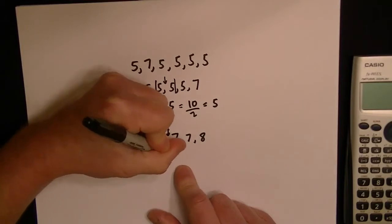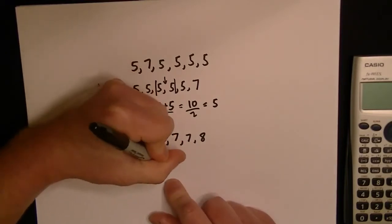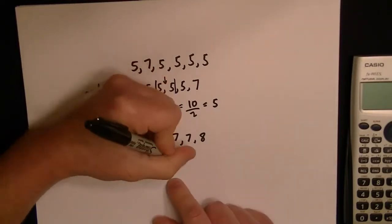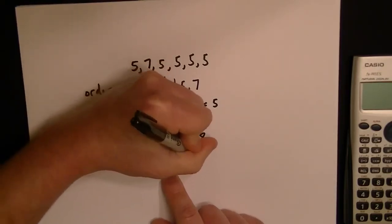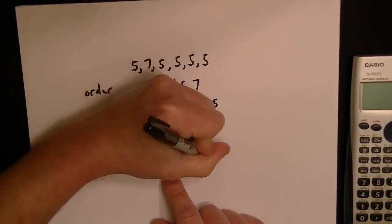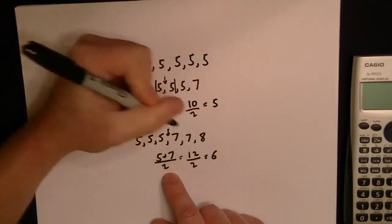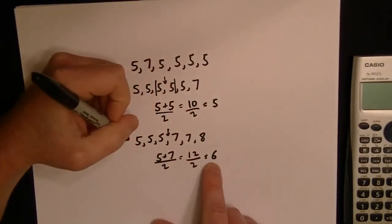So in this case, you would use 5 plus 7 then divided by 2 since you're working with two numbers here. So that would give you a 12 over 2. So in this case, the median of this set is 6.